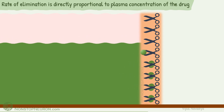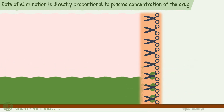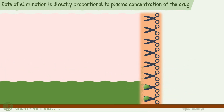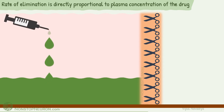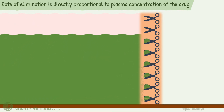As more and more drug is eliminated, its concentration falls. At low concentration, fewer drug molecules come in contact with the enzymes, so less are eliminated. Thus the rate of elimination is lesser at lower plasma concentration. Now, if you give the next dose of drug, the plasma concentration increases. Again, more drug comes in contact with the enzymes and more is eliminated. Thus, in first order elimination kinetics, rate of elimination is directly proportional to plasma concentration.